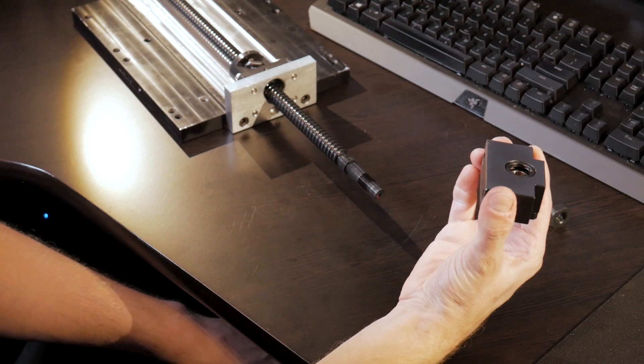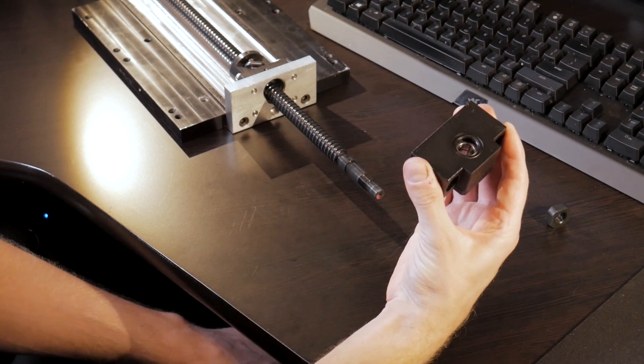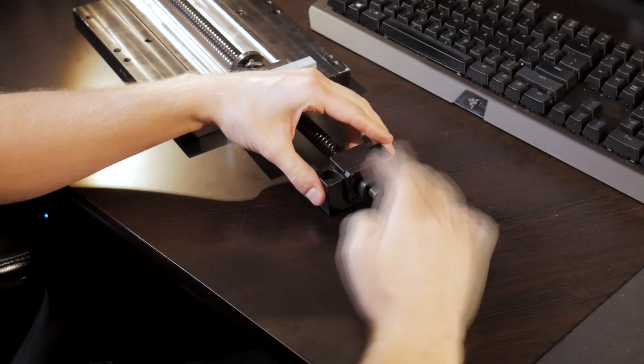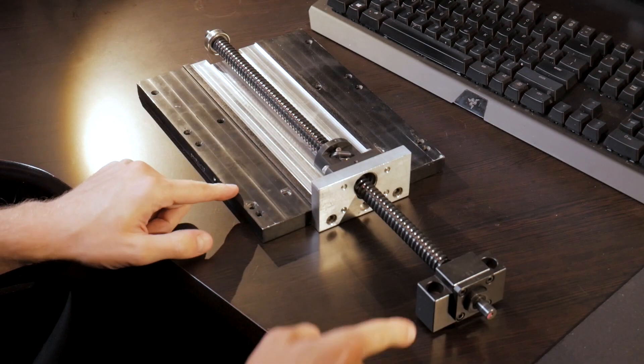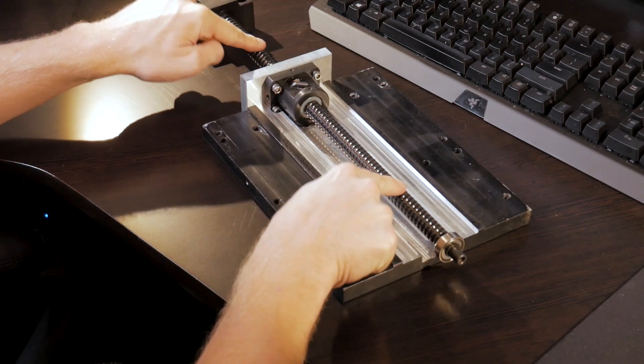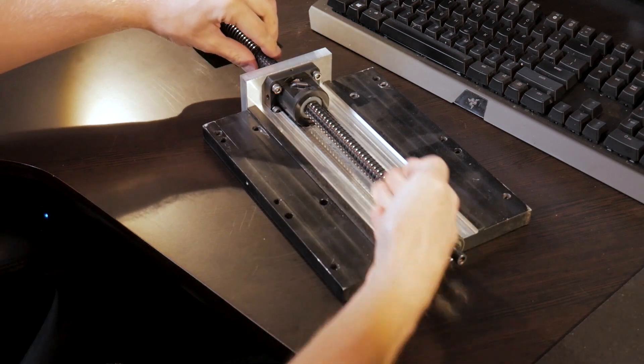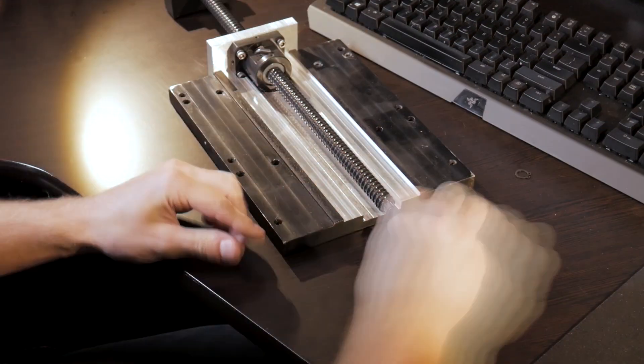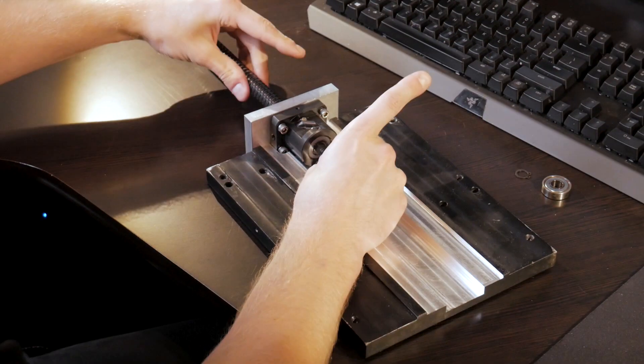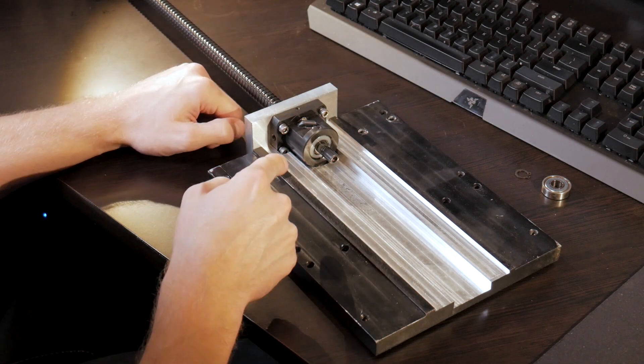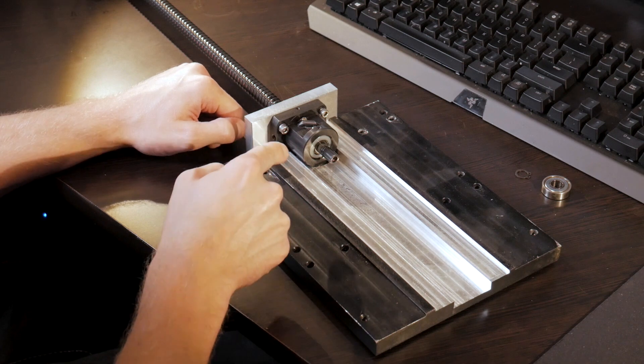This is the fixed bearing block in this ball screw assembly. Inside it are two opposed angular contact bearings. And unfortunately, this is on the wrong end, which means that this screw needs to go through this ball nut and be reinstalled from the other side. Now I know this seems pretty straightforward, but this is no ordinary screw.